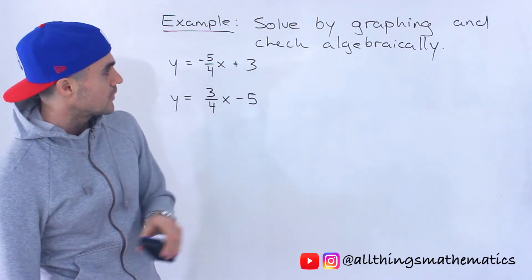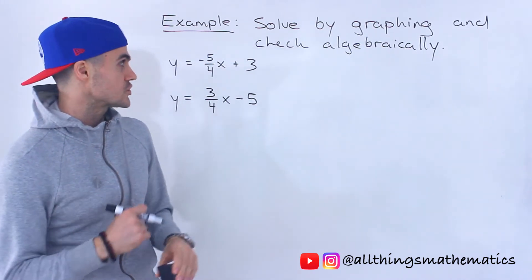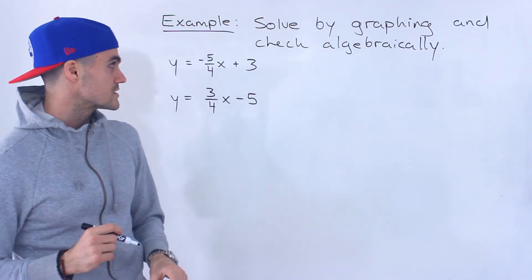We have to take these two lines here, the system of equations, and we have to solve it by graphing. So finding the point of intersection, and then whatever answer we get on the graph, we're going to check algebraically as well.